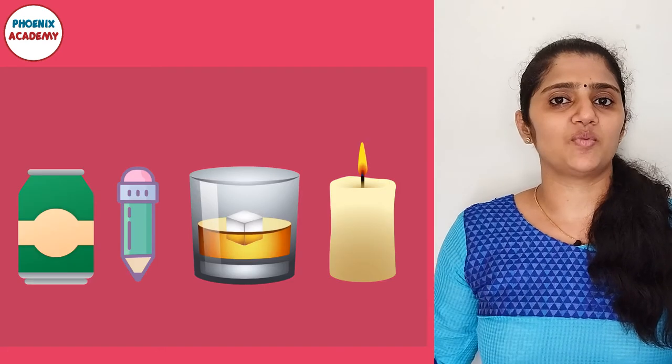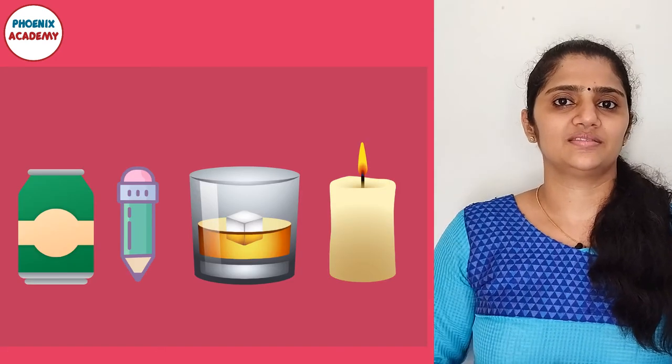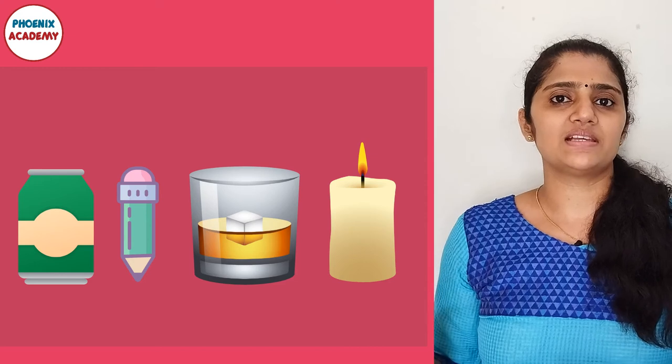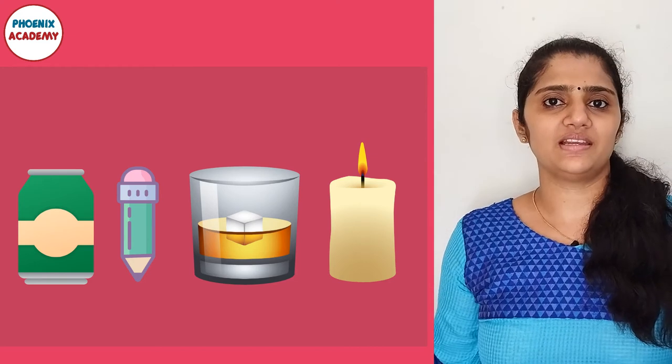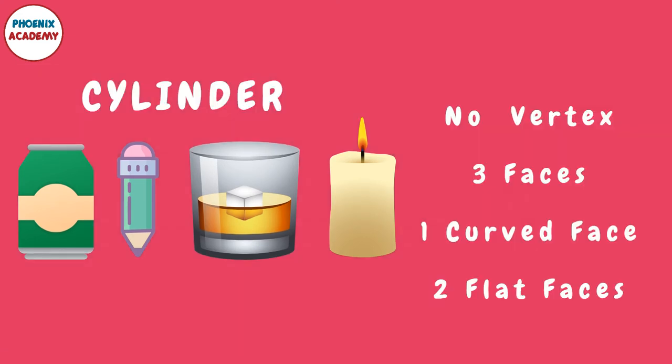Can you tell me the shape of these objects? All these objects have the shape of a cylinder. One face of a cylinder is a curved face. Two faces — the top and bottom of a cylinder — are flat.